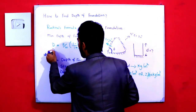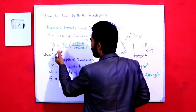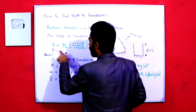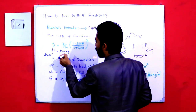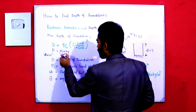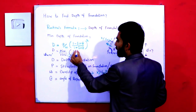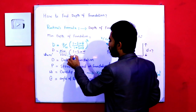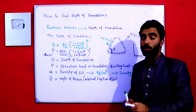Now let's do an example calculation. For example, if the structural load P is 1500 kg per meter square, and W (density of soil) is, for example, 2300 kg per meter cube, and the angle of repose theta is 25 degrees, then you put these values into the formula: D = 1500 divided by 2300, multiplied by (1 minus sine 25) divided by (1 plus sine 25), all squared. Using a calculator you can easily find the minimum depth of foundation.